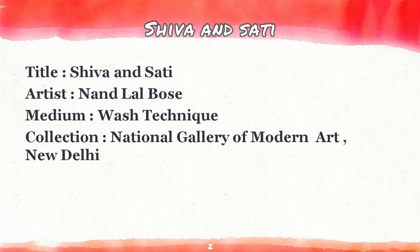The title of the painting is Shiva and Sati. You have to write A.D. properly — use the correct symbol because there are chances of marks being cut. The artist is Nandlal Bose. The medium is the Bosch Technique. The collection is the National Gallery of Modern Art, which is located in New Delhi.